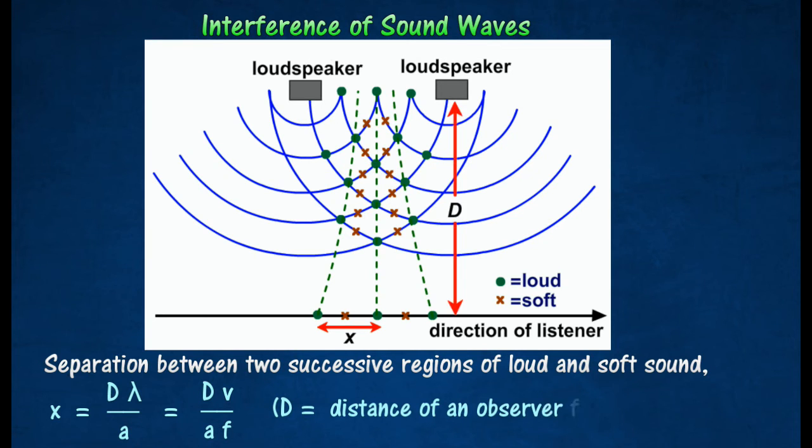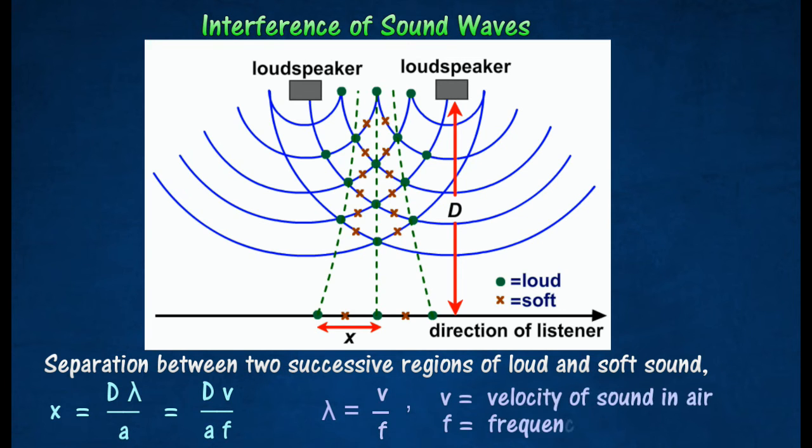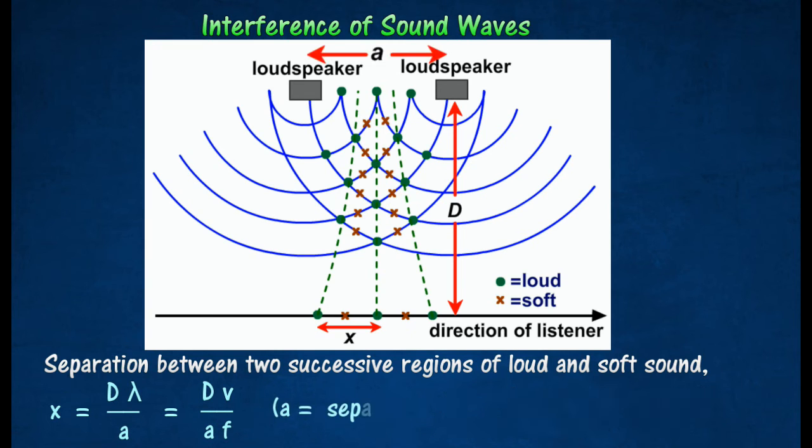D is the distance of an observer from the speakers. Lambda is the wavelength of the sound and can be determined by the ratio of velocity of sound in air to the frequency of sound from the signal generator. A is the separation between the two speakers.